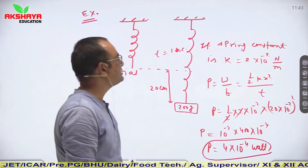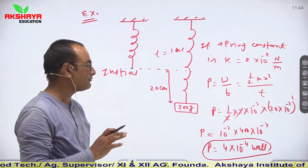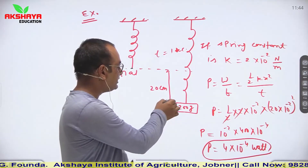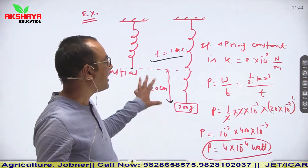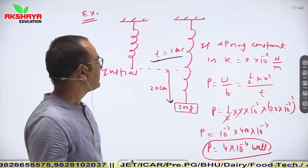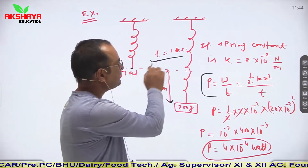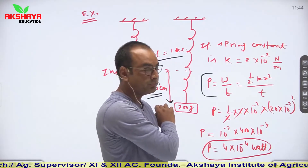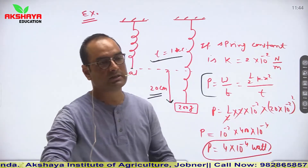One more pattern involves stretching a spring. A spring has an object of mass 200 g suspended from it in vertical position, and it expands by 20 cm in one second. Spring constant k = 2×10⁻² N/m. Work done in stretching = ½kx² = ½ × 2×10⁻² × (20×10⁻²)² = 4×10⁻⁴ J. Power consumed = work/time = 4×10⁻⁴ watts.